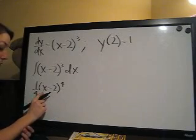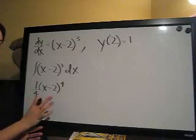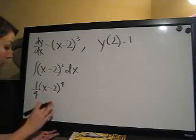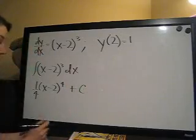The derivative of (x-2) is just 1, so we would multiply this by 1. It has no effect. So this is our integral, and then we add C as a constant.